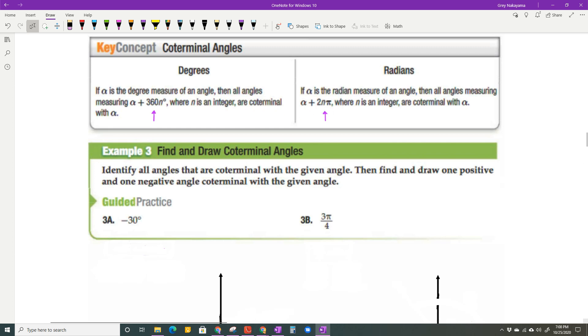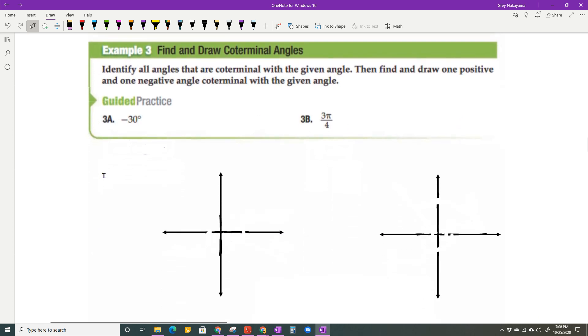And this right here is telling you all of the angles, and you're going to see this is all of the radians. As I do these last two problems, you will see how that applies. So this first one says, identify all the angles that are coterminal with the given angle. So all the angles that are coterminal with negative 30 degrees are going to be negative 30 degrees plus 360 n. All the angles that are going to be coterminal with 3 pi over 4 are going to be 3 pi over 4 plus 2 pi n.